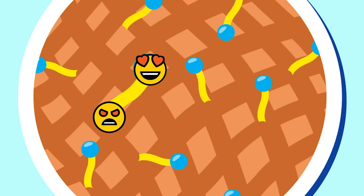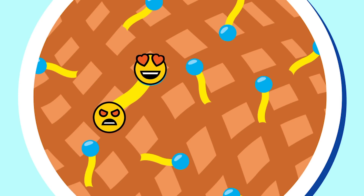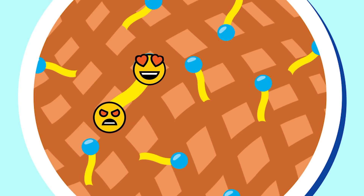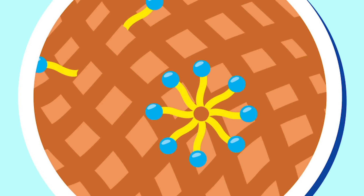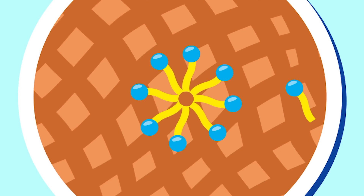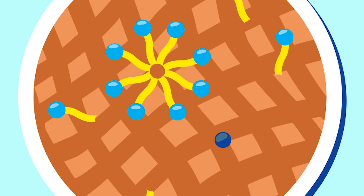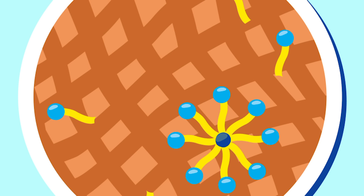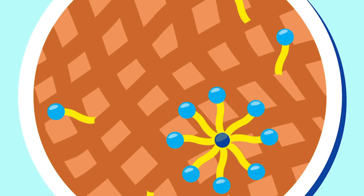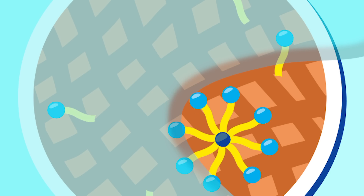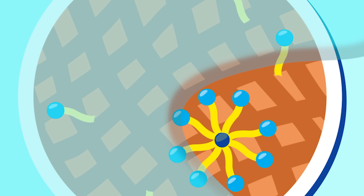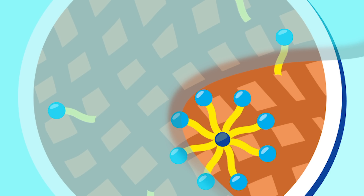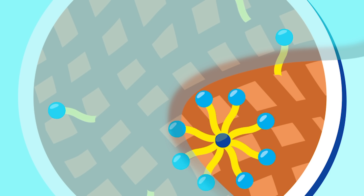How these two ends interact with soil and water is the secret to how a surfactant works. When a surfactant comes near dirt and grease, the end that does not like water is attracted to the dirt. The surfactant molecules surround it, forming a sphere. When exposed to water, such as in a washing machine or a sink, the water-loving ends of the surfactant make the sphere attracted to the water.